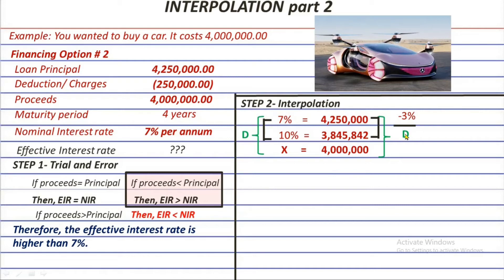On the present value side, we do the same. 4,250,000 minus 3,845,842 equals 404,158, which is the numerator. For the denominator, we have 4,250,000 minus 4,000,000, which equals 250,000.